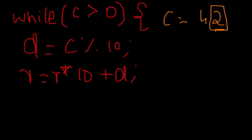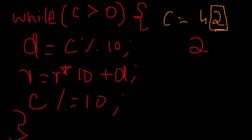And, let's say you have a variable called R, which shows your reverse. Now, what I'm saying is, R is equal to R into 10 plus D. So, what's going on here? And, let's say R begins to be 0. So, if R is 0, 0 into 10 plus D, you get 2 over here. Now, you write C divided by equal to 10 and close your while loop.